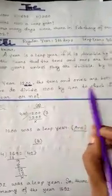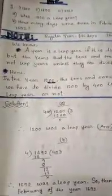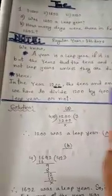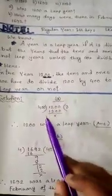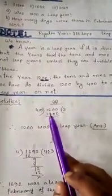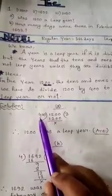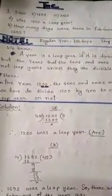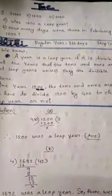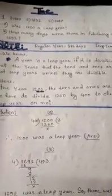Now check the solution here. 1200 is mentioned here. We are dividing it by 400. The quotient is 3 and there is no remainder. So 1200 was a leap year. I think the concept is clear girls.